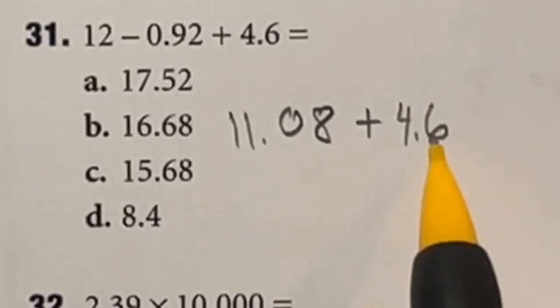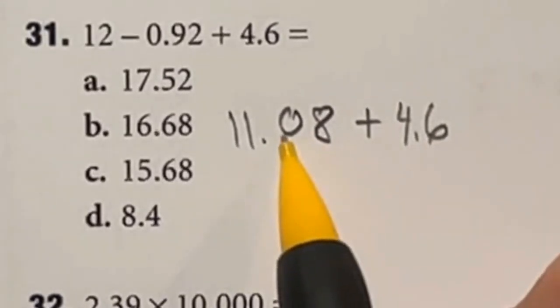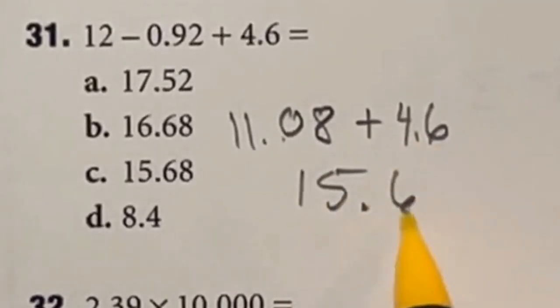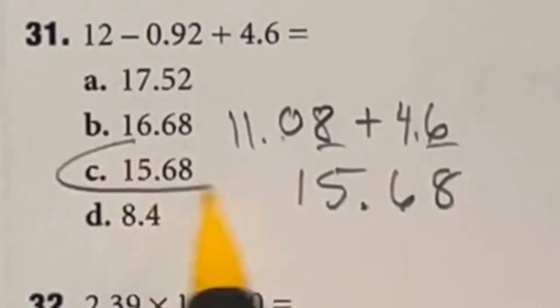Now, when we do that, the 6 does not go with the 8, it goes with the 0. So we're looking at 11 plus 4, which is 15. And then we have the 0.68 from the 6 here, the 8 here, for a final answer of C.